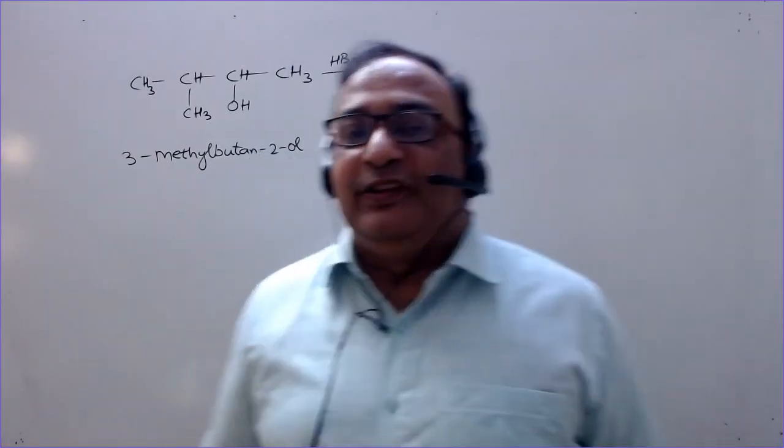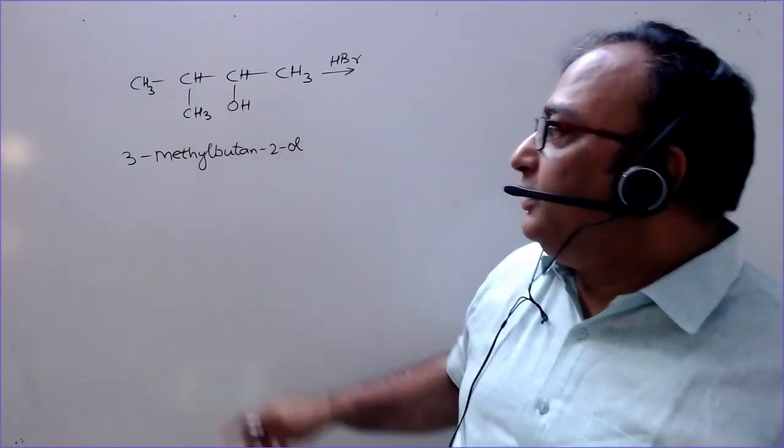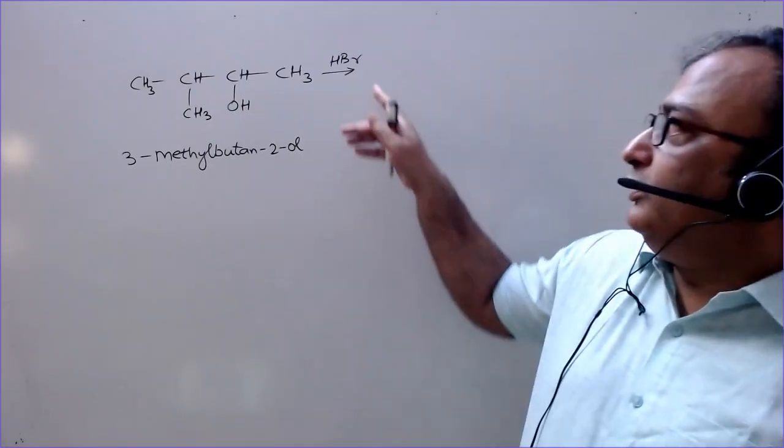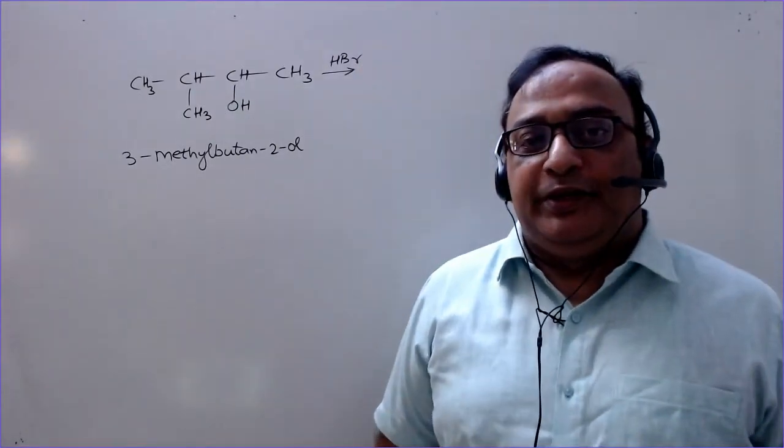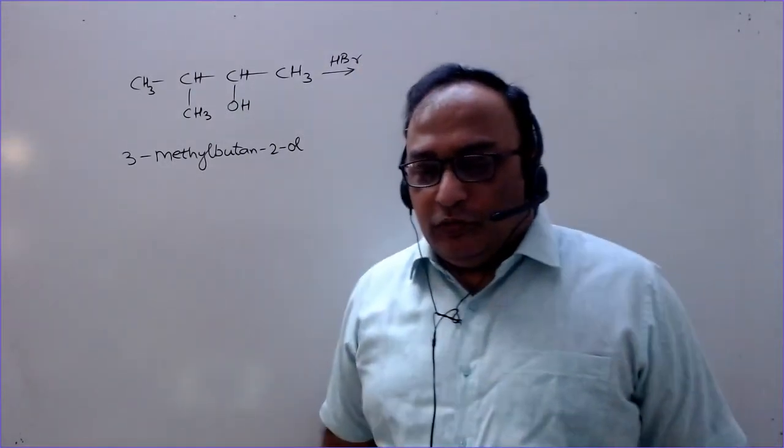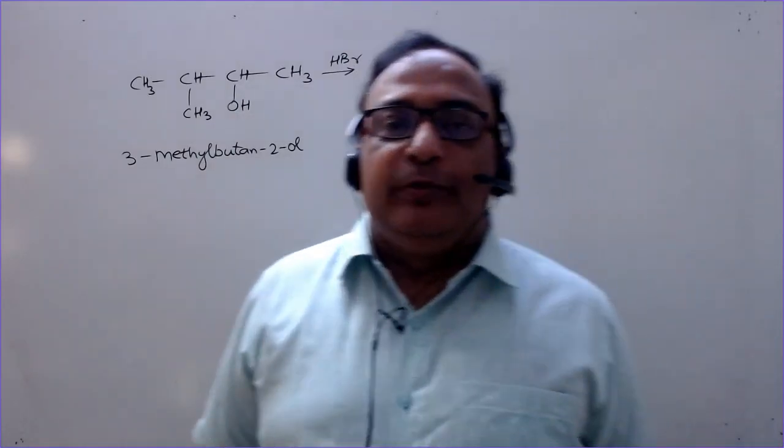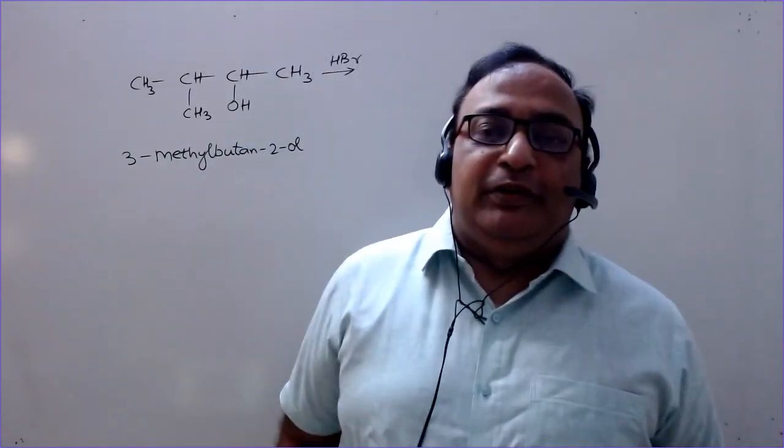This is a question we are going to discuss: what happens when 3-methylbutane-2-ol is treated with hydrogen bromide? Two compounds are likely to be formed - which one will be the major and which one will be the minor?